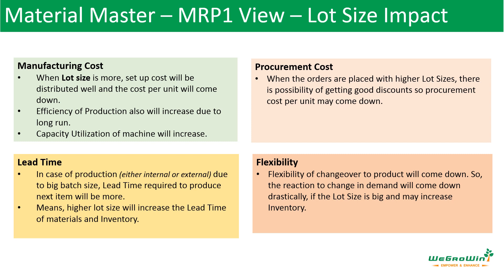With a big lot size, instead of producing 10 per lot, if you produce a hundred or a thousand per lot, the raw material is already cut, machined, or processed and is not available for some other product. So flexibility is lost and you are not able to change over to another product if there is some urgent requirement. From manufacturing and procurement point of view, higher lot sizes are better, but from lead time, flexibility, and customer service point of view, having lower lot sizes is always better — this is a trade-off.